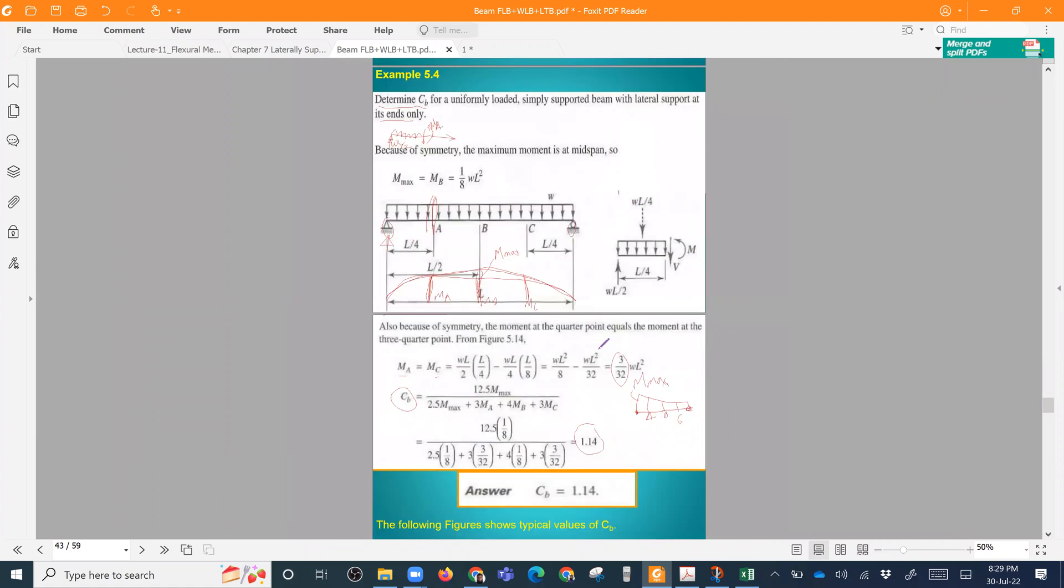You are listening to me? Yes sir. What is the name of the factor? The factor is Cb. The Cb factor formula is 12.5 m max divided by 2.5 m max, 3 m a, 4 m b and 3 m c. Yes sir.